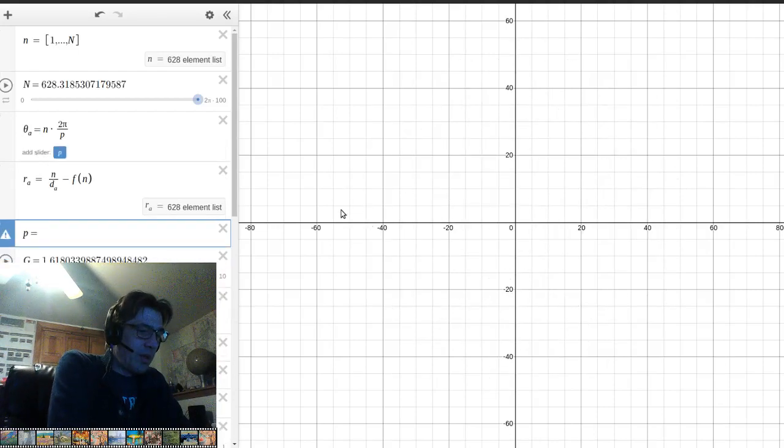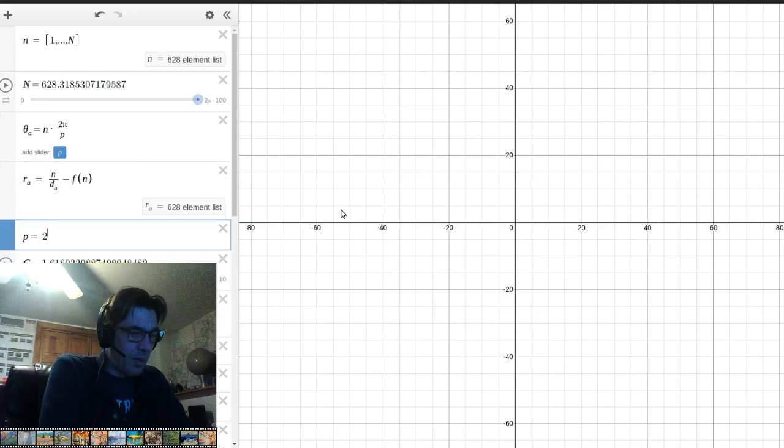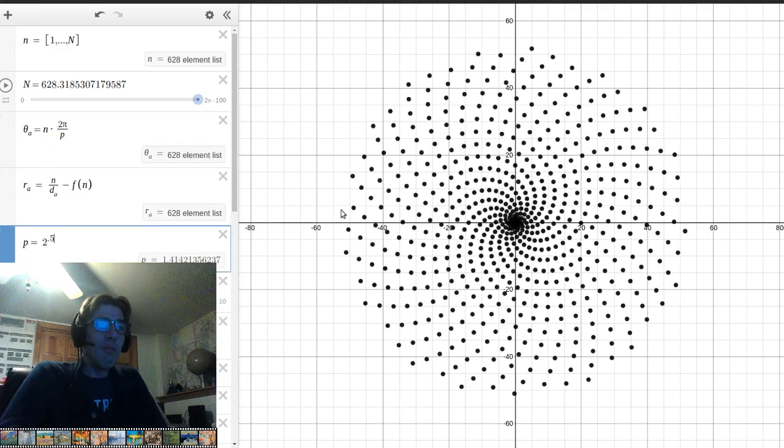Now, square root of 2, which would be 2 to the 0.5, well, that actually looks a little bit like the golden ratio factor. Now, why is this?